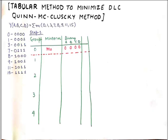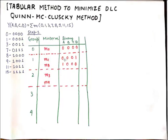The next step involves making a table where the first column is the group number. Group 0 represents numbers with no 1s, group 1 represents numbers with just one 1, group 2 has two 1s, group 3 has three 1s, and group 4 has four 1s. In front of group 0 I write minterm 0 and its binary equivalent 0000. Group 1 will have M1 and M8 because these two minterms have just one '1' in their binary representation. Then M3 will have 0011, M9 will have 1001, and so on. Step 1 is to populate this table.